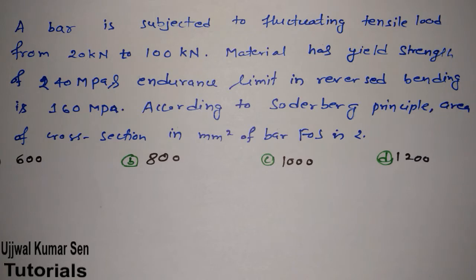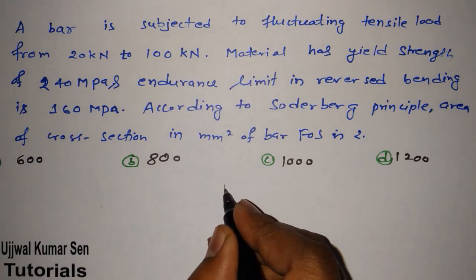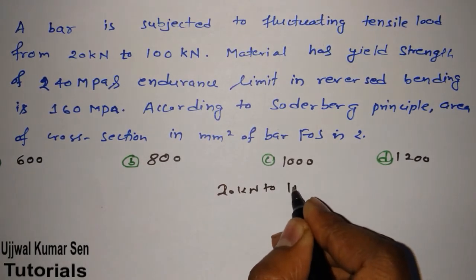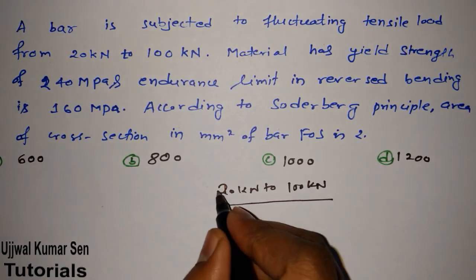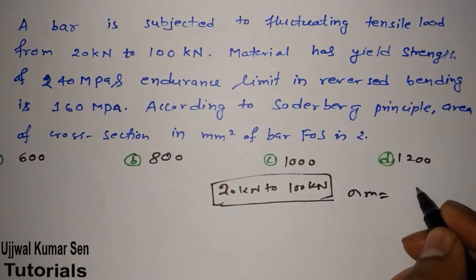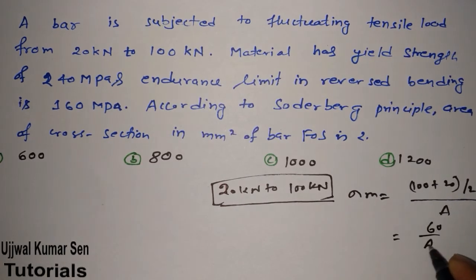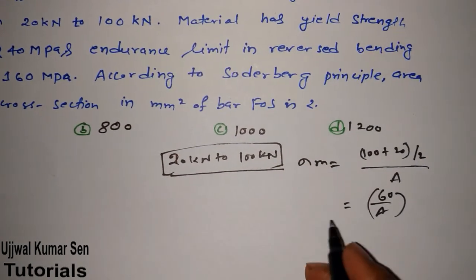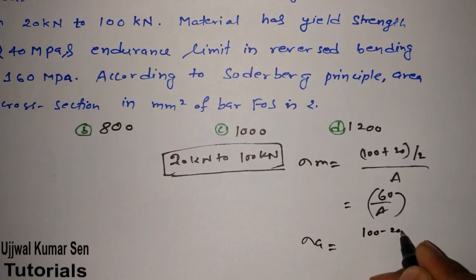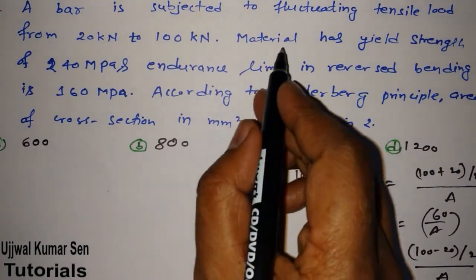The question states: a bar is subjected to fluctuating tensile load from 20 kilo newton to 100 kilo newton. Since it is a fluctuating load, we can find the mean stress: σm = (100 + 20)/2 / Area = 60/Area. From here we can also find σa = (100 − 20)/2 / Area = 40/Area.